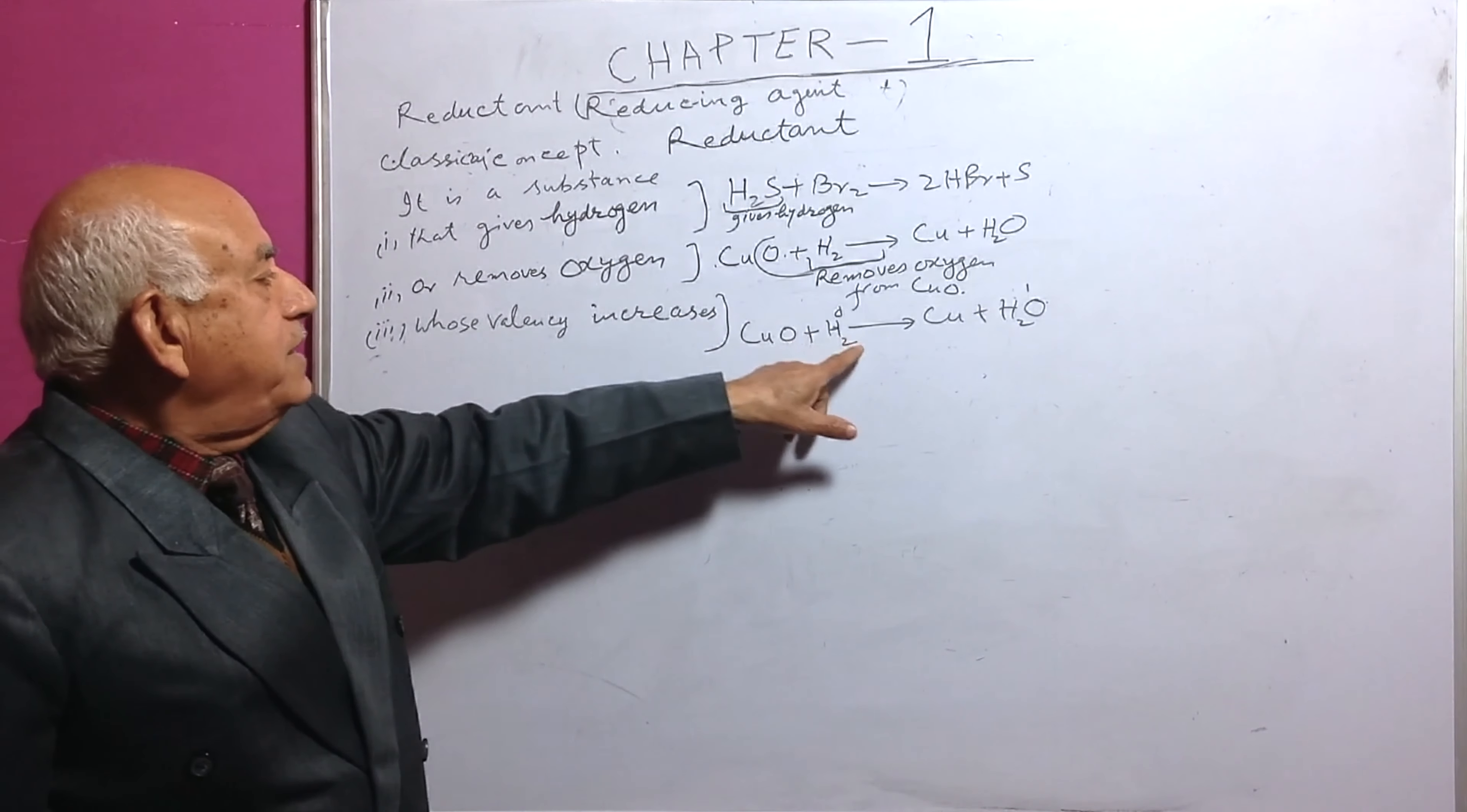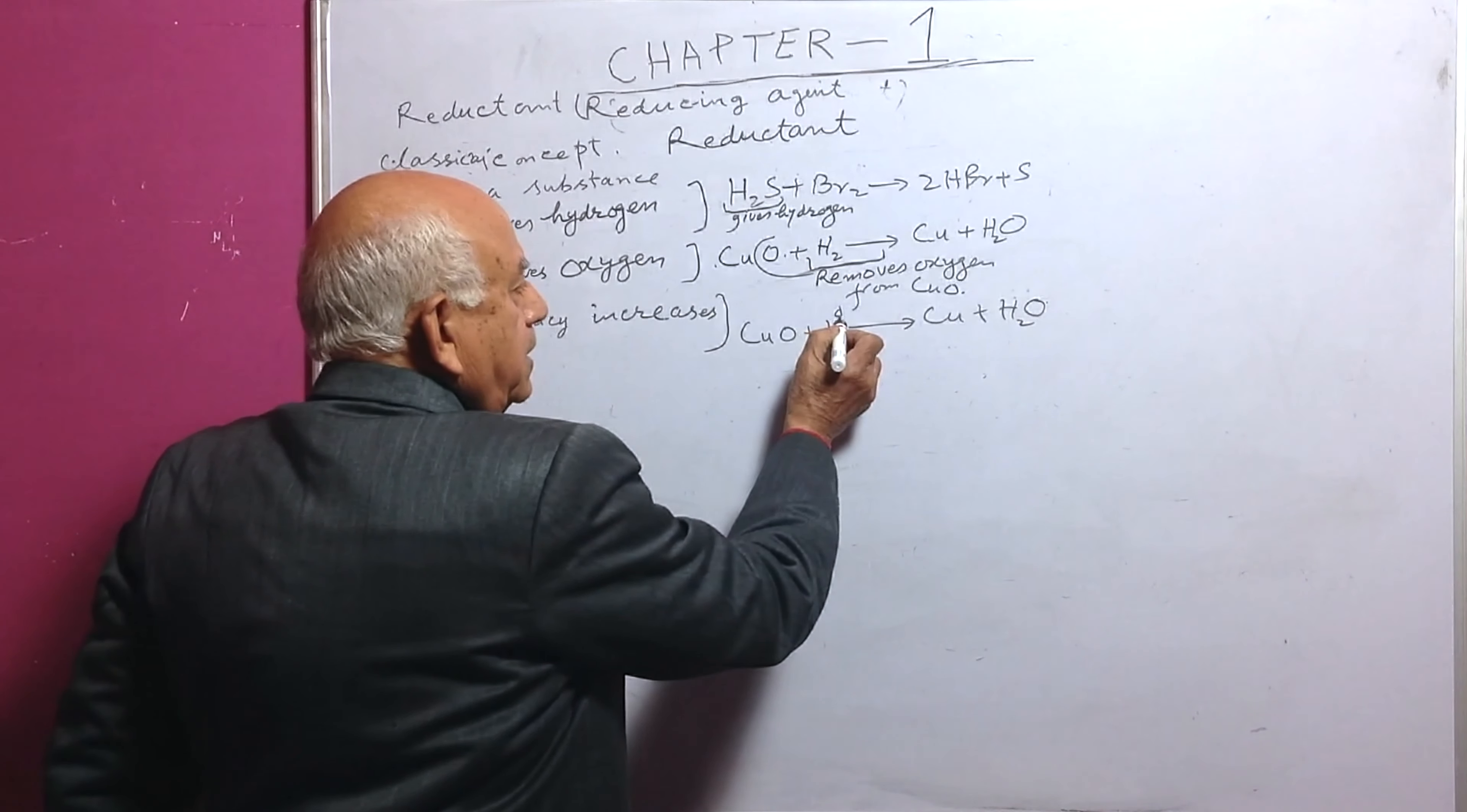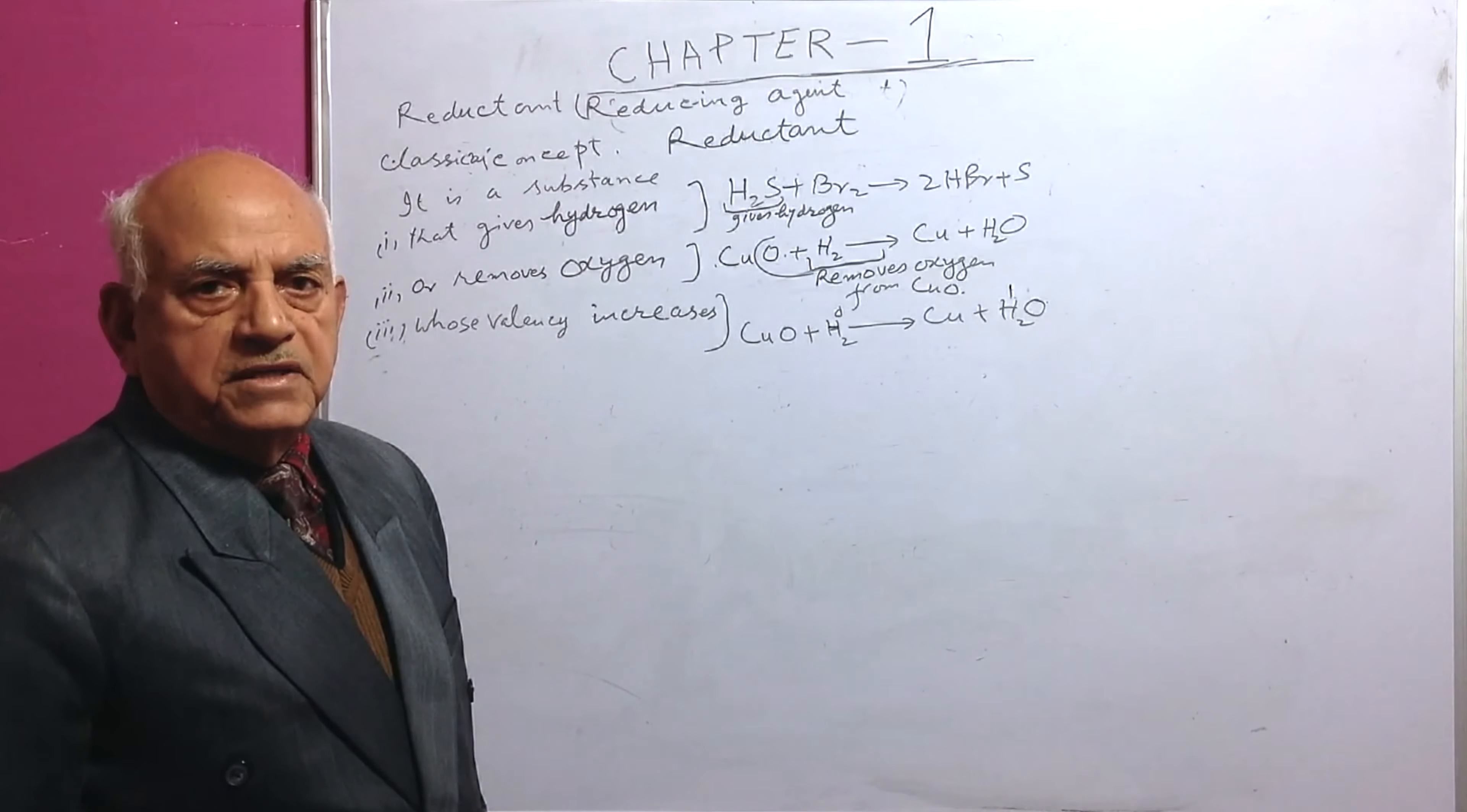Copper oxide plus hydrogen gives copper and water. In this case, the valency of hydrogen is increasing from 0 to 1. Hydrogen in this case is +1.